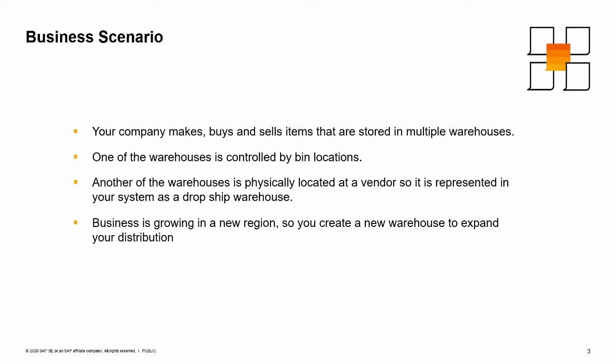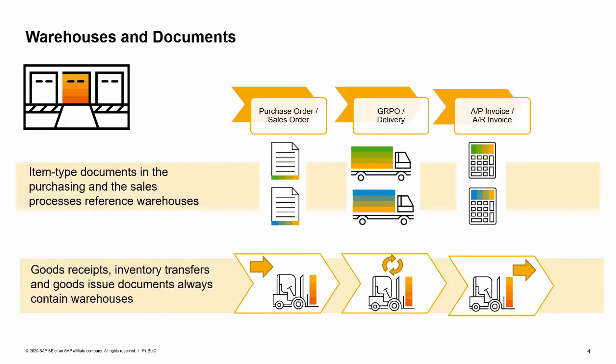Your company makes, buys and sells items that are stored in multiple warehouses. One of the warehouses is controlled by bin locations. Another of the warehouses is physically located at a vendor, so it is represented as a drop ship warehouse. Your business is growing in a new region, so you create a new regional warehouse to expand your distribution.